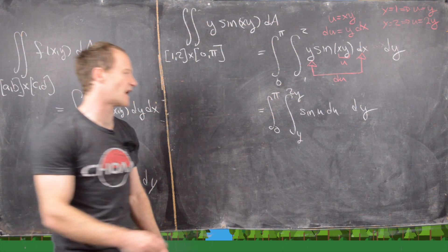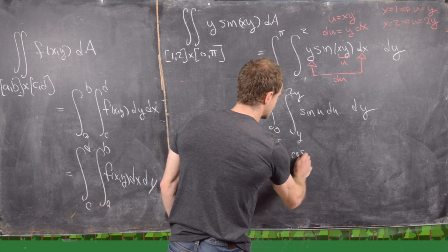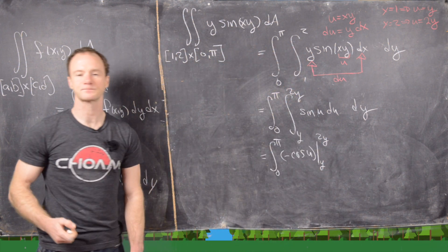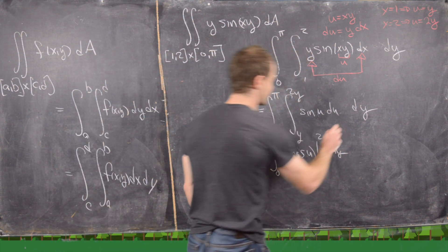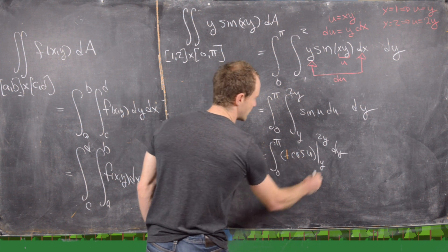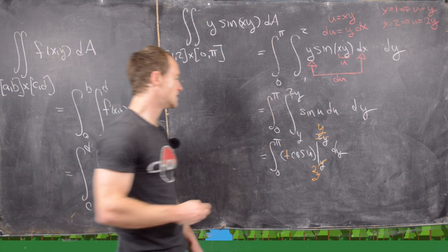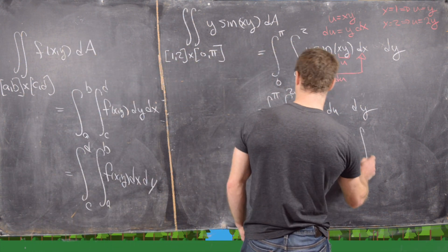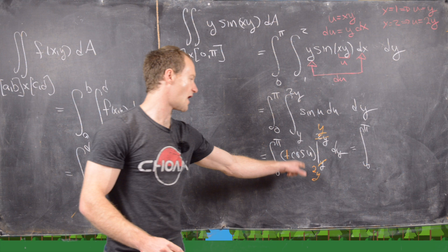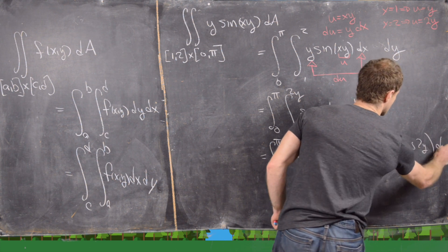We take the antiderivative of sine, which is negative cosine. So we have the integral from 0 to π of negative cosine of u evaluated from y to 2y. Taking that minus sign and switching the bounds gives us the integral from 0 to π of cosine(y) minus cosine(2y) dy.